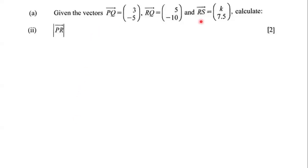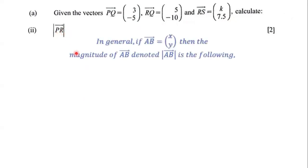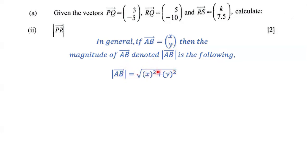Now they want us to calculate the magnitude of vector PR. In general, if vector AB equals (x, y), then the magnitude of vector AB — denoted with two vertical lines and an arrow on top — is given by the general formula: the square root of x squared plus y squared.